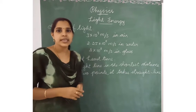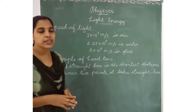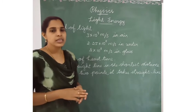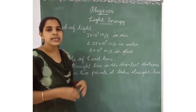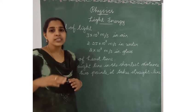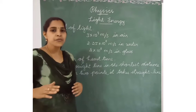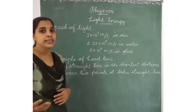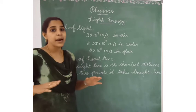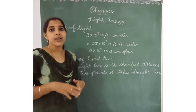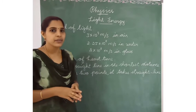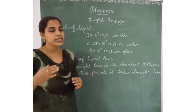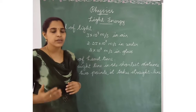We also studied about diffuse reflection. Diffuse reflection means parallel rays of light fall on a rough surface. Again the light is reflected, but it is not parallel — it is reflected everywhere.